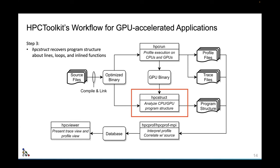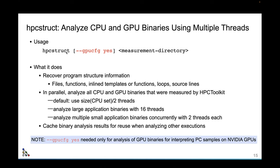The second part of our workflow is HPC Struct, which analyzes CPU and GPU program structure. When collecting profiles and traces at runtime, we're relating things to machine code addresses. HPC Struct recovers the mappings from machine code addresses to your source code and records these program structure files. You just run 'hpcstruct' on your measurement directory. For NVIDIA GPUs, there's a GPU-CFG option you might want to add if you're using PC sampling to collect instruction-level performance measurements — it's optional because NVIDIA doesn't give us a proper infrastructure for this and it's a bit costly.